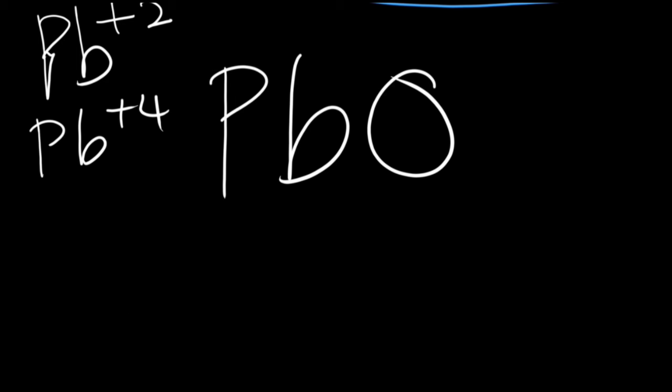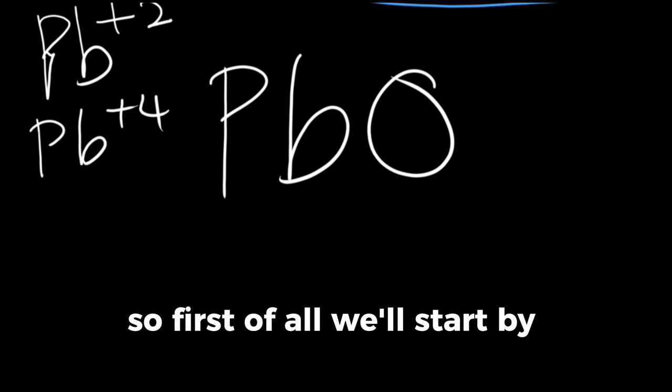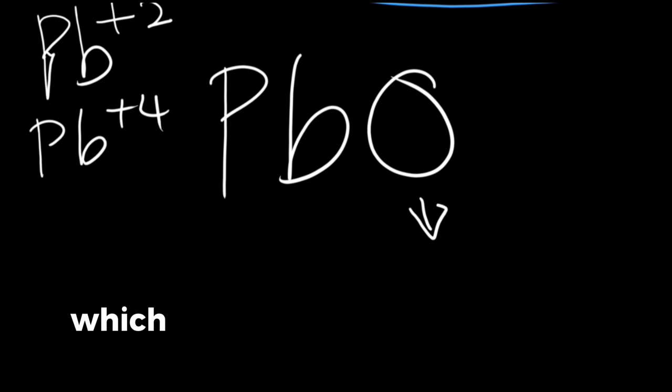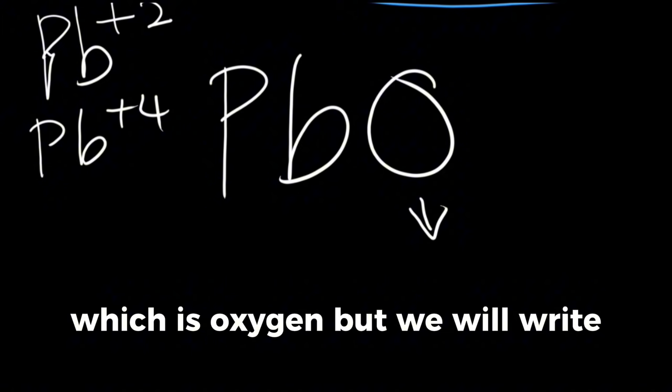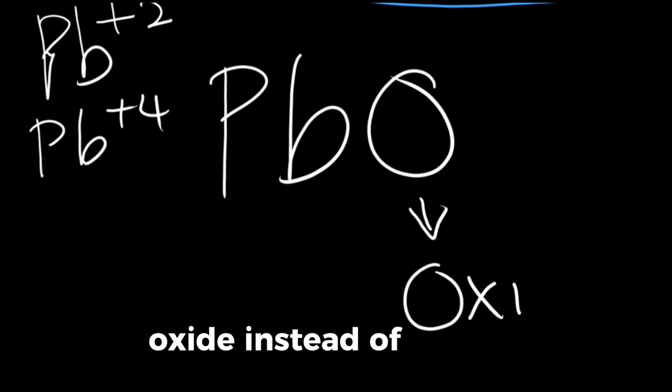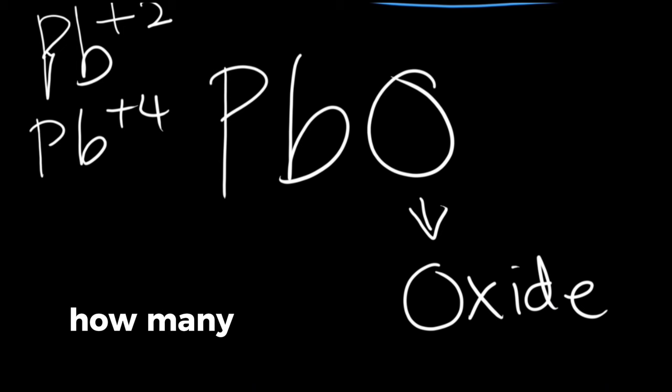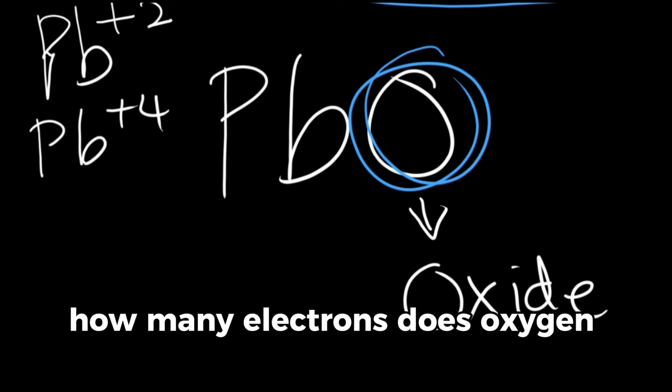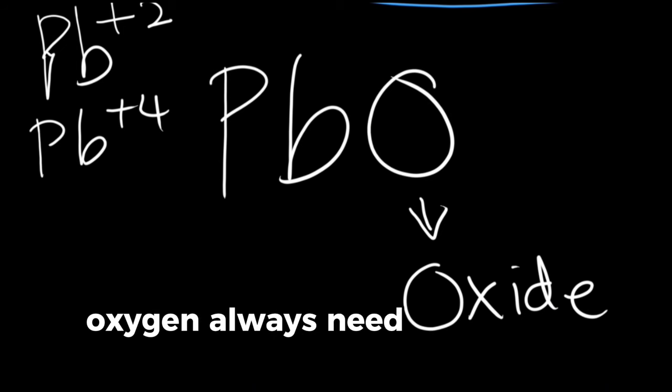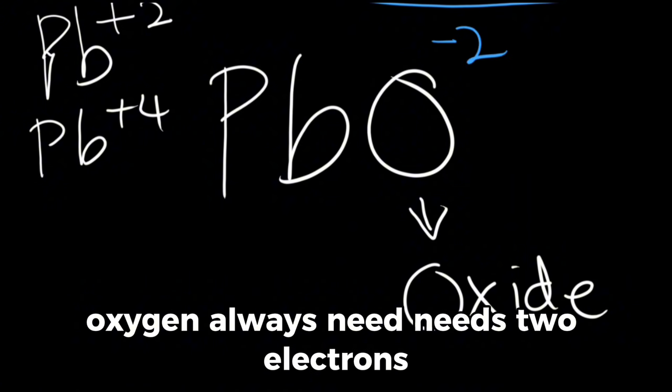Now, how can we name it? First of all, we'll start by naming this here, which is oxygen. But we will write oxide instead of oxygen. And then we will check. How many electrons does oxygen need? Oxygen always needs two electrons.